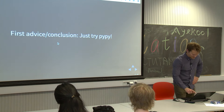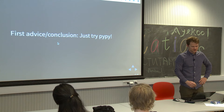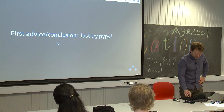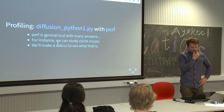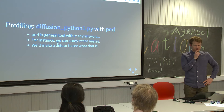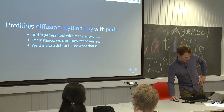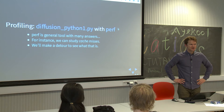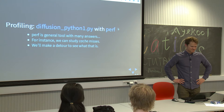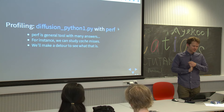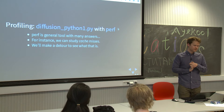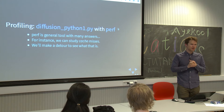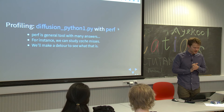That would be my first advice for today: just try PyPy, because it typically does not require you to do any changes to your code — you can just run your script through it. To understand a bit more or to get some metrics on why PyPy is now faster than normal CPython, we look through the final profiling tool called perf. That's a tool with many, many options, but you have to know what questions to ask it. I have just one example question: we want to study something called cache misses, because this is also something that's really important for Python code and makes Python code a bit slower — the memory layout of Python objects.